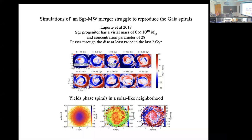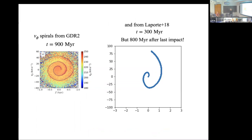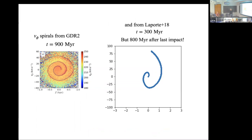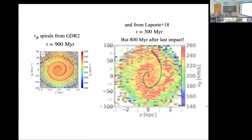They do indeed find phase spirals in the simulation, looking at a solar neighborhood-like region of their galactic disc. But the spirals look nothing like what we see in the data. If you try to count the windings within this region of phase space and compare at the same scale, the spirals in the simulation are not nearly as well defined and not nearly as tightly wound as the spirals we see in the real data. That seems to be a general feature of the simulations.